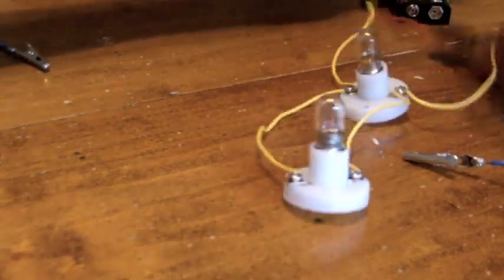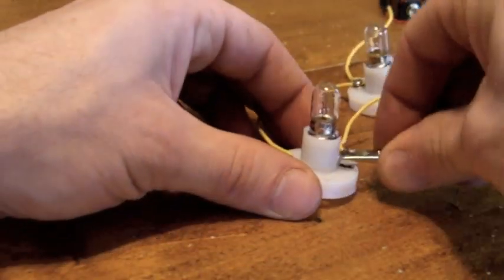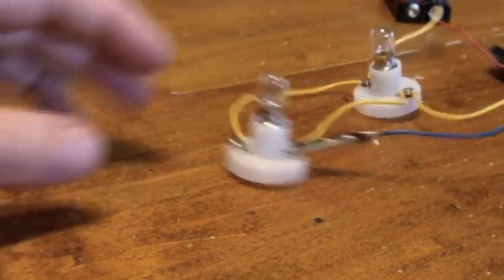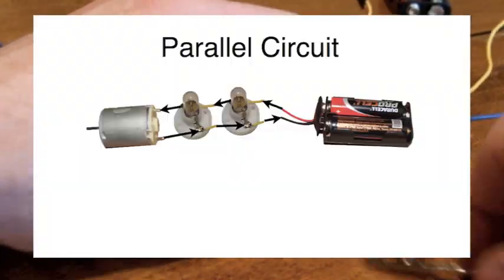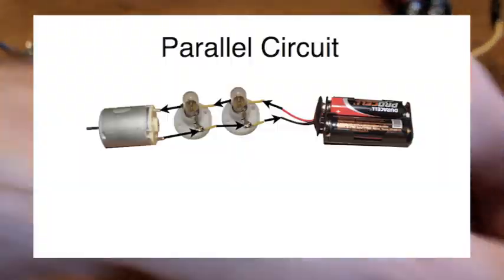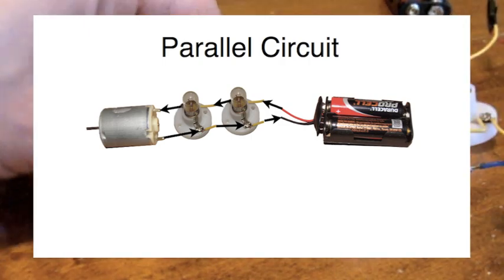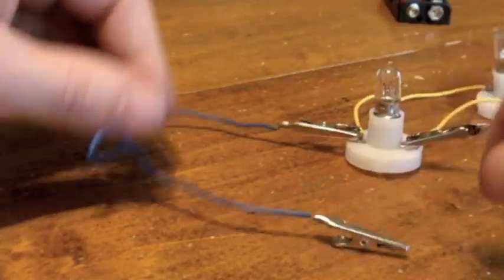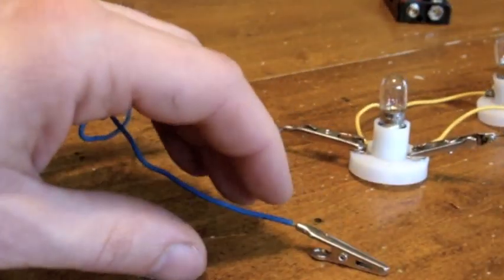Alright, so let's disconnect the batteries and add in a motor in parallel. Now I'm going to use the alligator clips and clip onto that last bulb on either side so that the circuit will be split from that last bulb. And now I'm going to connect the motor with alligator clips.